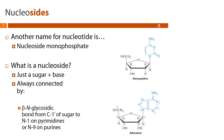For nucleosides, the N-glycosidic bond is always from the one-prime carbon on the sugar to nitrogen-1 on pyrimidines or nitrogen-9 on a purine. Since a nucleoside has two separate cyclic residues, we number both — but to avoid confusion, when numbering the sugar ring we add a prime to each number. Go ahead and pause to number the deoxyribose residue on the deoxycytidine molecule shown.